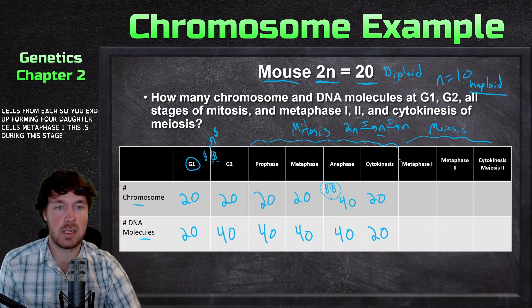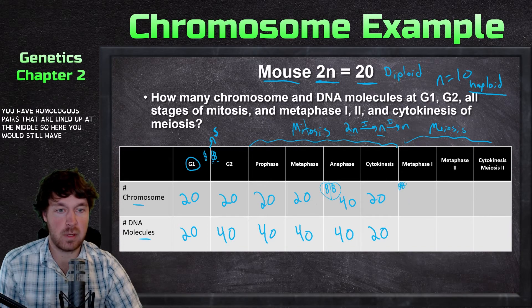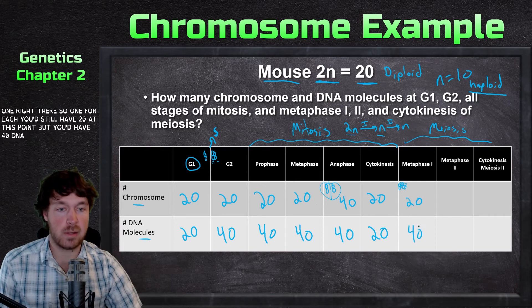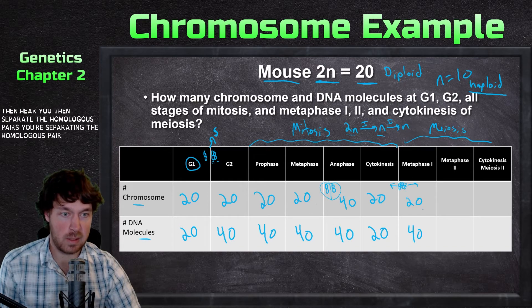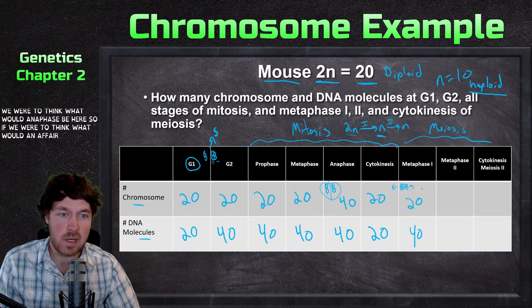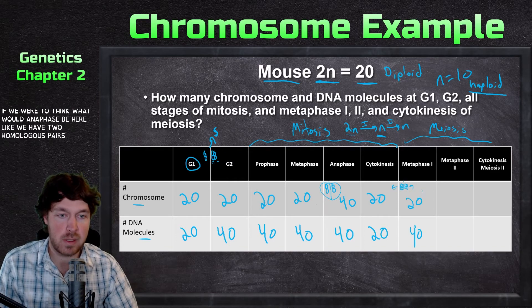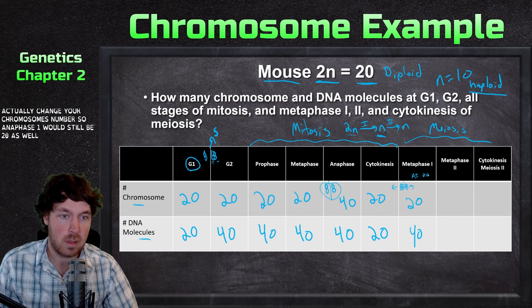At metaphase one, you have homologous pairs lined up at the middle — you'd still have 20 chromosomes at this point, but 40 DNA molecules. Then here you separate the homologous pairs. At anaphase one, we're separating homologous pairs, not sister chromatids, so we don't actually change the chromosome number — anaphase one would still be 20 chromosomes.